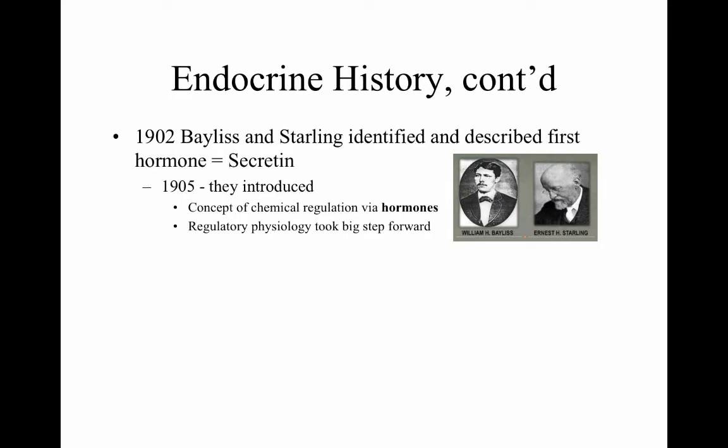Around 1902, Bayliss and Starling identified and described the first hormone: secretin. Secretin is key for taking the very acidic output of the stomach and mixing it with pancreatic output to reduce the acidity of the chyme leaving the stomach. This introduced the concept of chemical regulation via hormones and regulatory physiology — the idea that our physiology can regulate bodily functions.